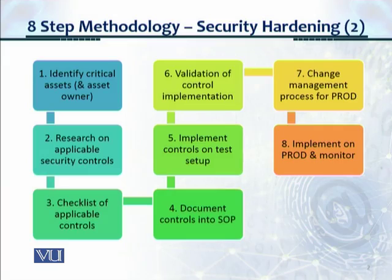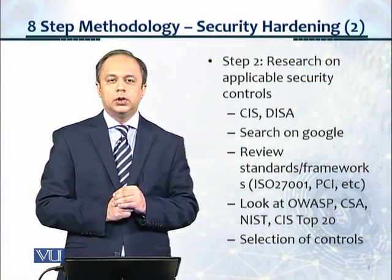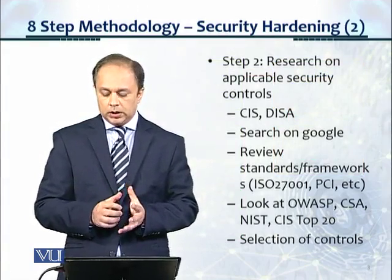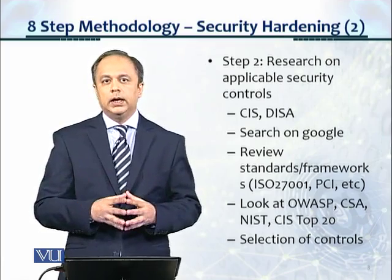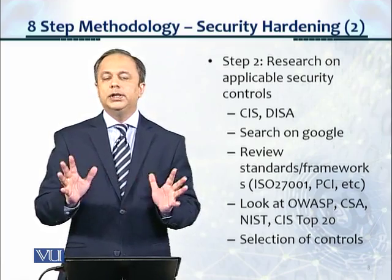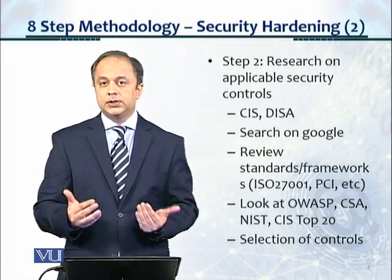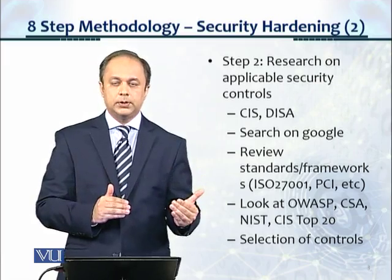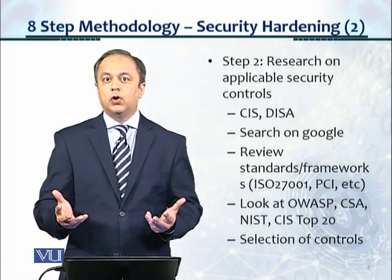In step number two, research on applicable security controls. What does this actually mean? CIS, Center for Internet Security, and DESA are two global leading frameworks — benchmarks, really — and these are used for hardening. You really don't need to look much further because they cover pretty much everything. There are exceptions because sometimes you have to go to OWASP, the Open Web Application Security Project, or sometimes to some other places. But CIS and DESA cover all the infrastructure.